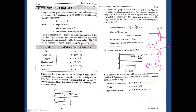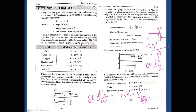Coming to thermal stresses — in case of constant cross section, delta L equals PL by AE. This formula comes from Young's modulus equals stress by strain, where stress is P by A and strain is delta L by L. Rearranging gives delta L equals PL by AE. In case of temperature stresses, delta L equals L·alpha·T, where alpha is the coefficient of linear expansion.